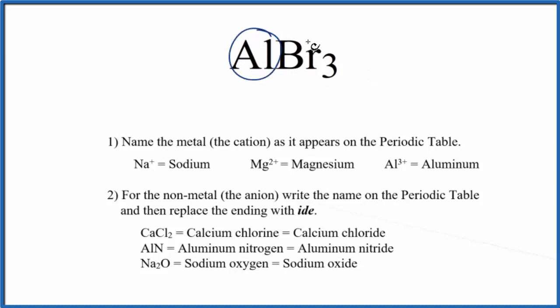Specifically, because we have two different elements, we call this a binary ionic compound, and we can use these rules to write the name.